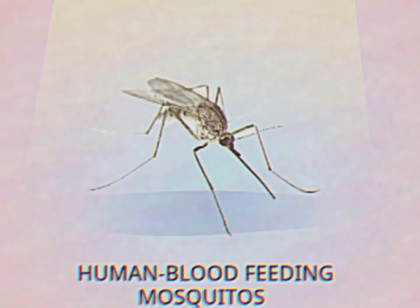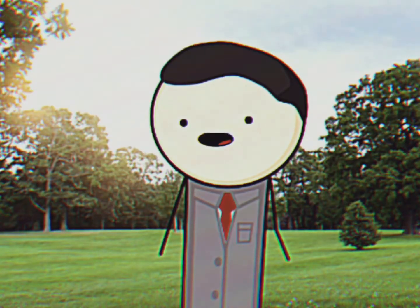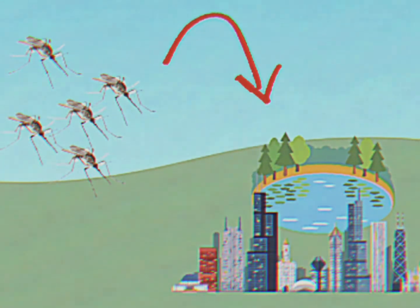Human-preying mosquitos, of course, have found a way to breed even during dry seasons, as human urbanization has played a huge role in the population increase of mosquitos. Naturally, human-preying mosquitos are attracted to the scent of blood. And when they follow the human populations, the mosquitos will also find that we have a large supply of water — a year-long supply of water that the human-preying mosquitos can use to keep breeding.